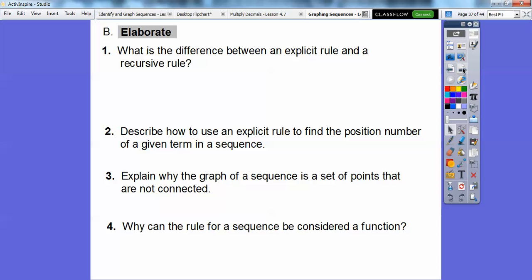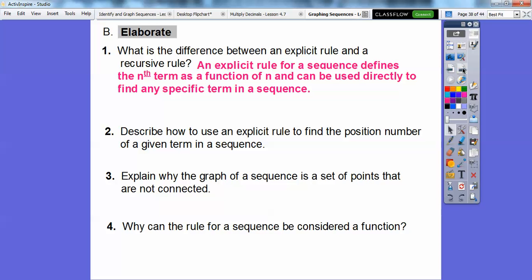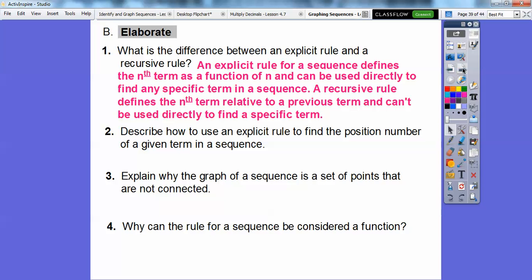So let's answer a series of questions here. What is the difference between an explicit rule and a recursive rule? Well, an explicit rule for a sequence defines the nth term as a function of n and can be used to directly find any specific term of a sequence. So in the last lesson, I think we found the 20th term or something like that, and we just plugged in 20, and I think it was n squared plus 2. So we got 20 squared is 400, 400 plus 2 is 402. So an explicit rule will let us find any specific term. However, a recursive rule is defined as the nth term that related to the previous term. So it always has the previous term involved, and it can't be used to directly find like the 20th term, because you need to know the 19th term, and to know the 19th term, you need to know the 18th term, and so on. So recursive rules, you can't find a specific term, but explicit rules you can because they give you a nice formula.